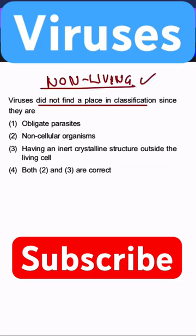First option is obligate parasite. Virus is obligate parasite which does not signify as non-living. Viruses are non-cellular organisms. This is absolutely correct and this is also known as non-living property.